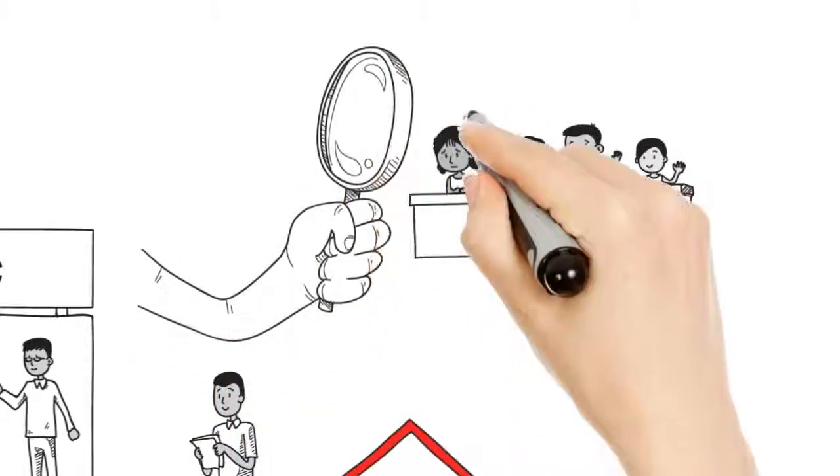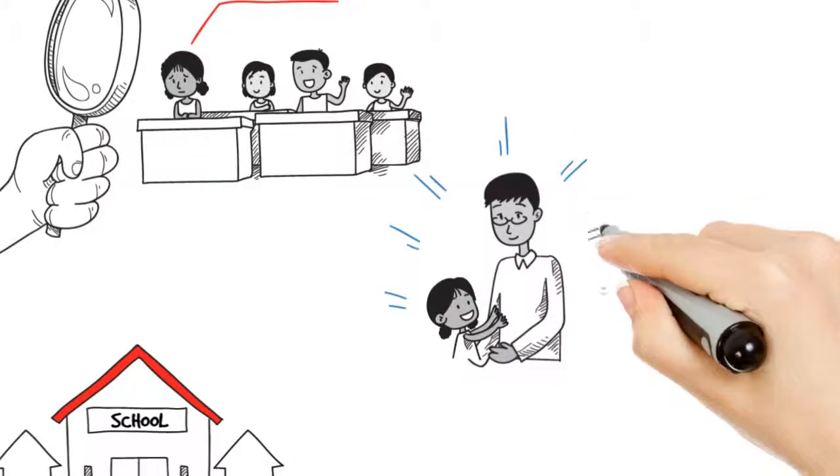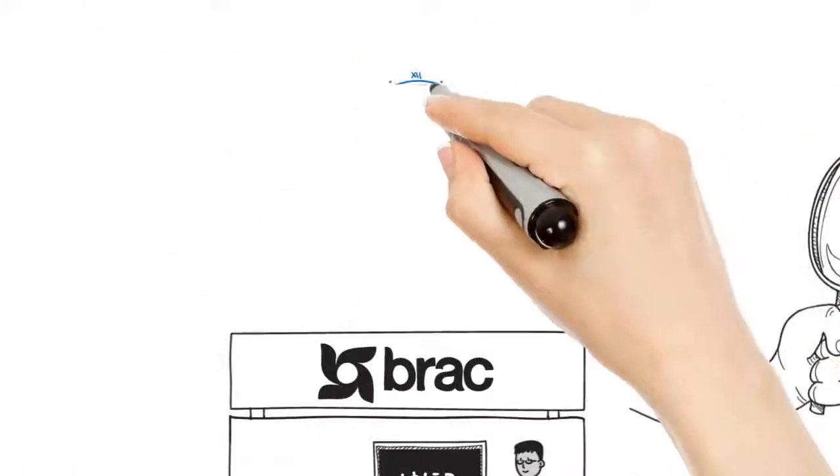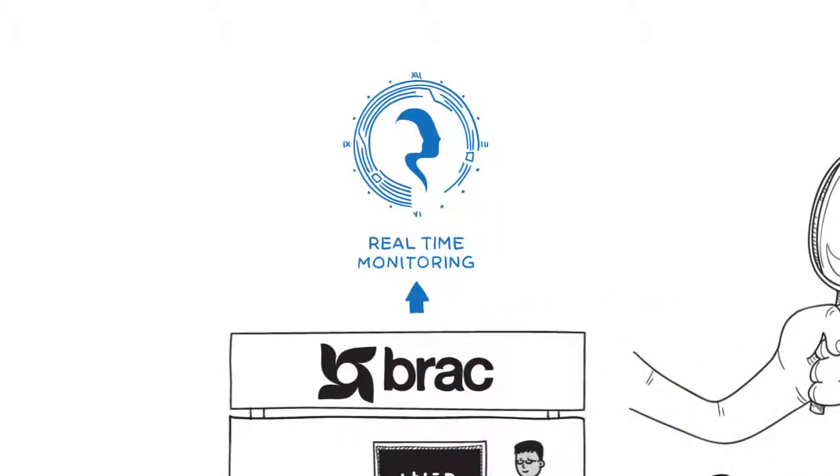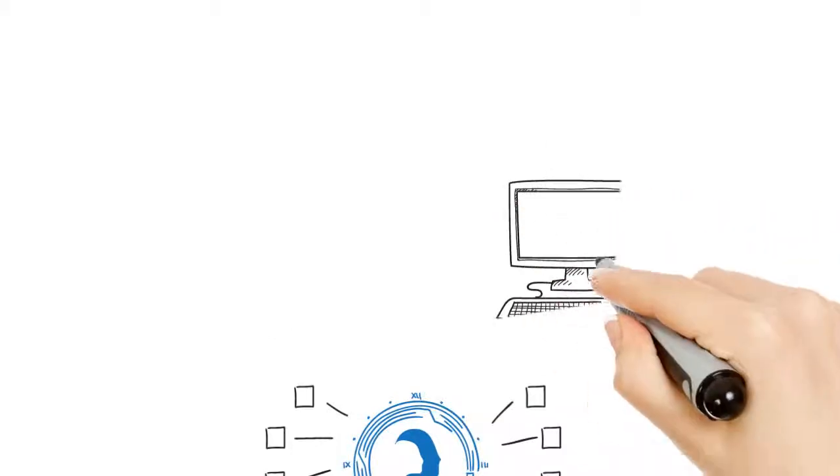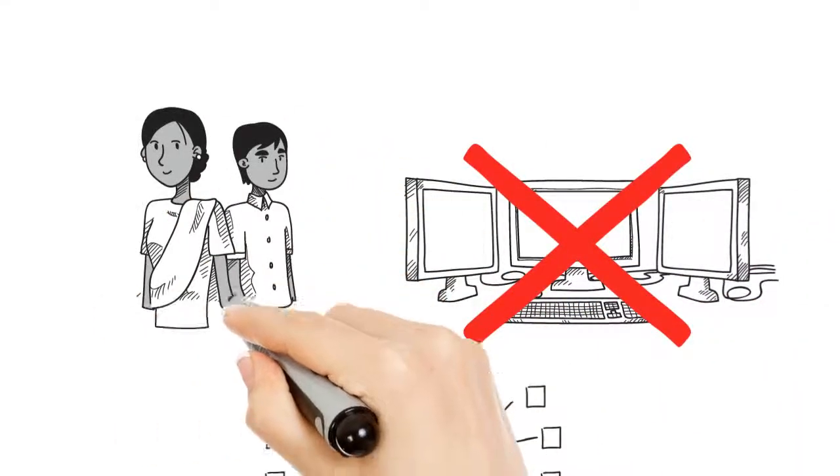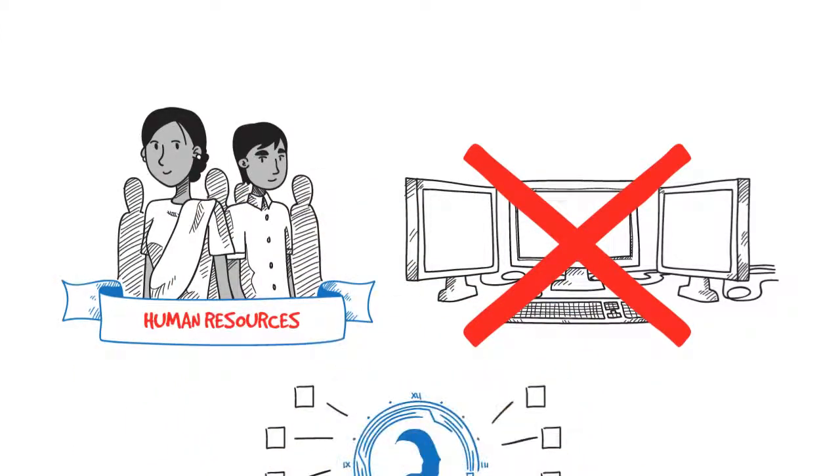From identifying children that need additional support to adjusting teaching techniques and even changing national policy. While many other RTM initiatives only cover project outputs, BRAC's system continuously monitors and therefore improves outcomes. No fancy or expensive technology, just a smarter use of resources and a better way to gather and respond to information.